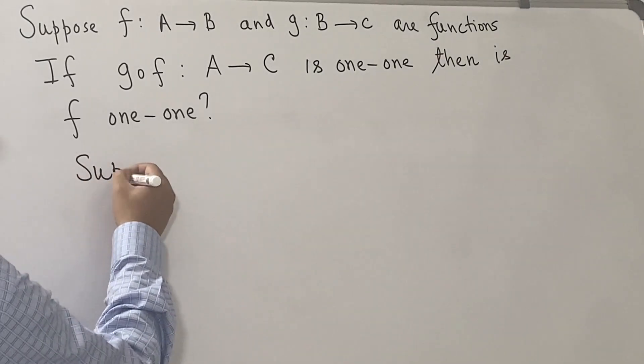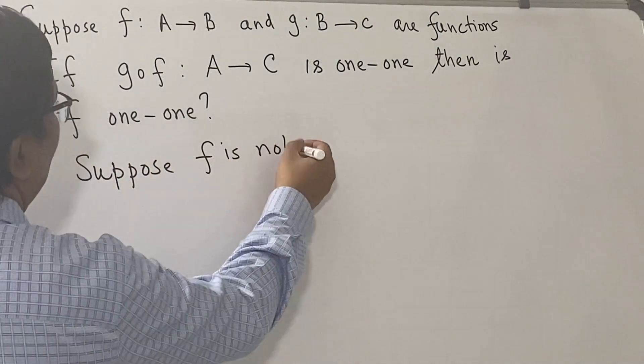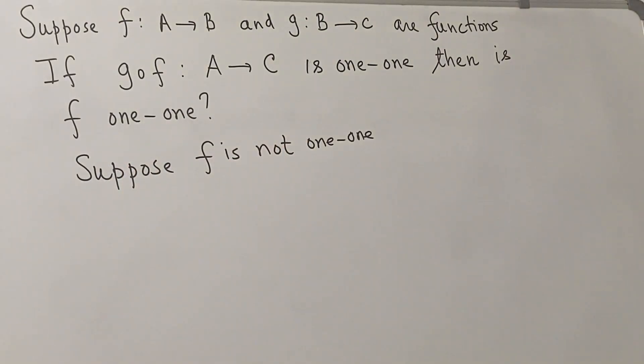Suppose f is not one-to-one. We will try a method of contradiction, so we begin by assuming that f is not one-to-one.